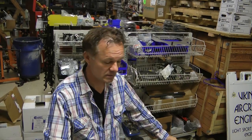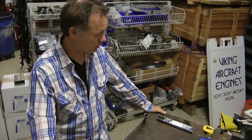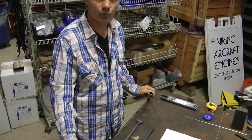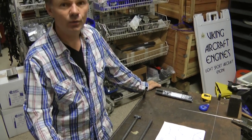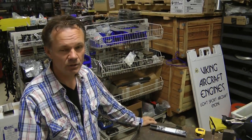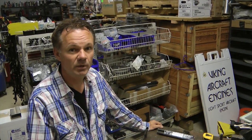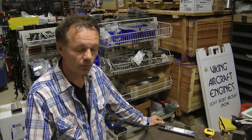We're at the Viking Aircraft Engines and we're doing a tip of the week with HomeBuiltHelp.com. What we're going to show today is how to, let's just say you wanted to build your own airplane out of steel tubing or you wanted to do an engine mount or a landing gear or whatever. You wanted to do something out of steel tubing and you didn't really know where to start.